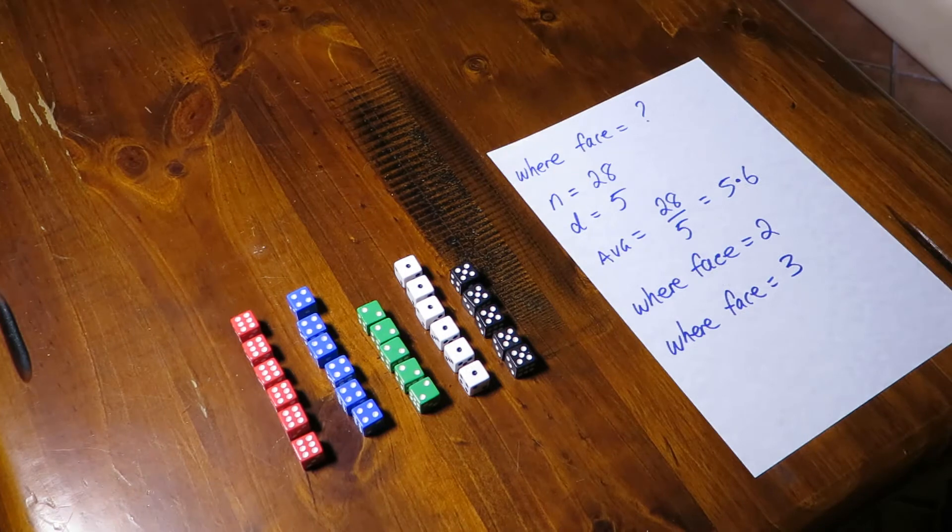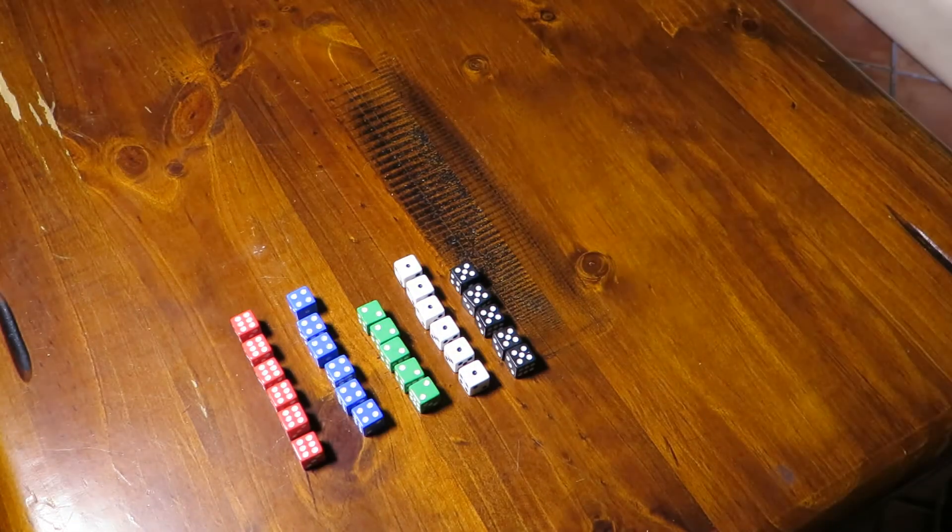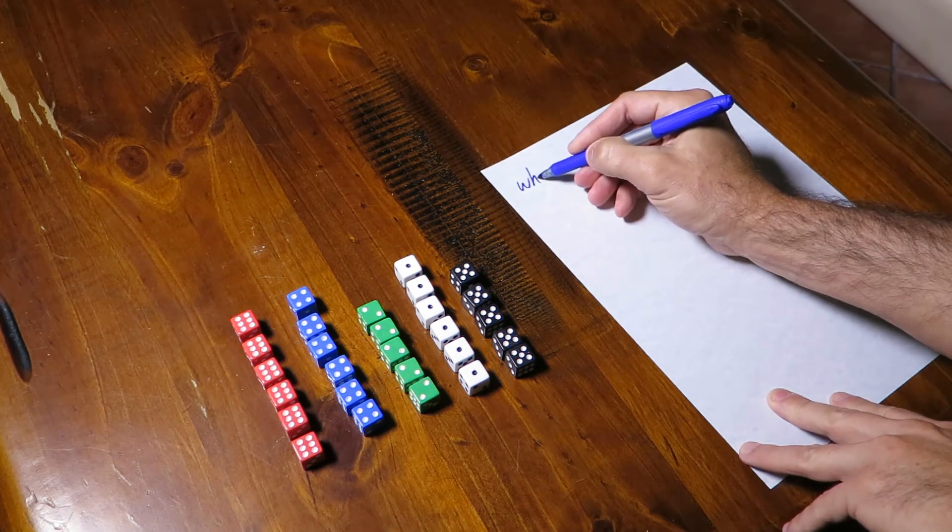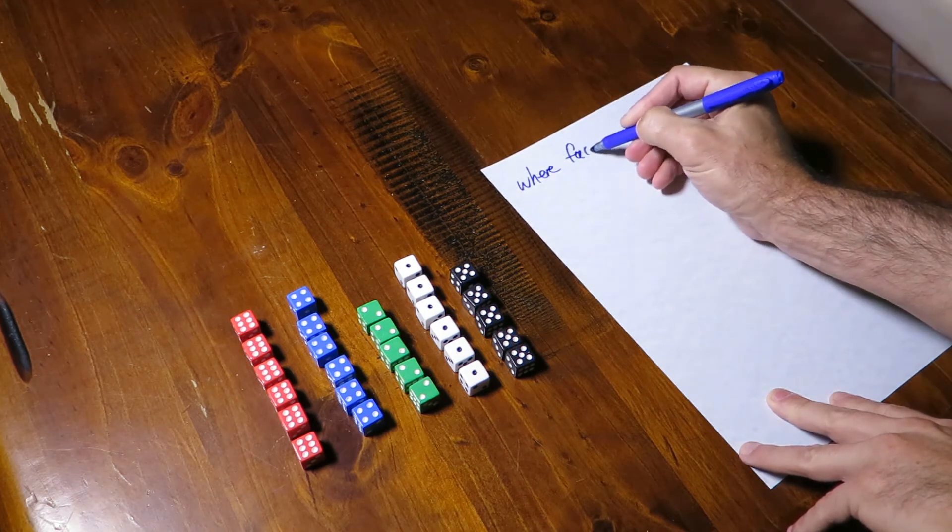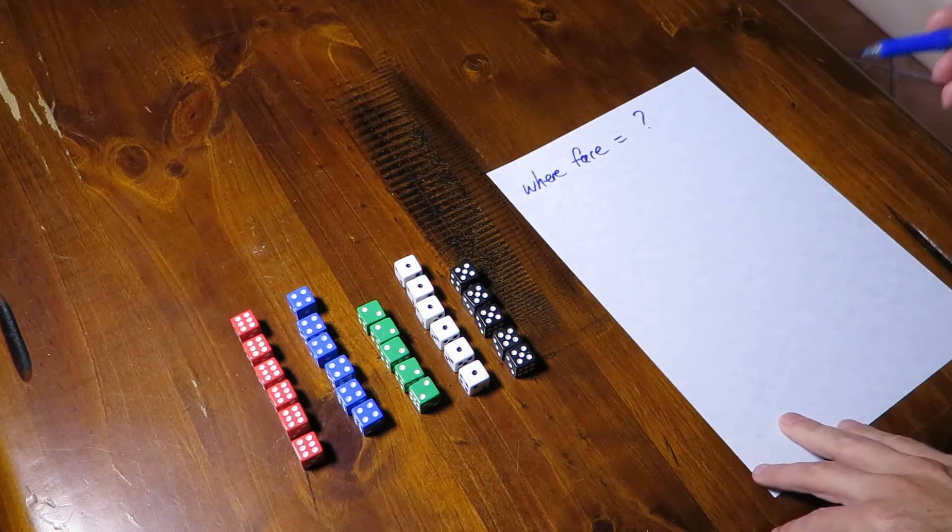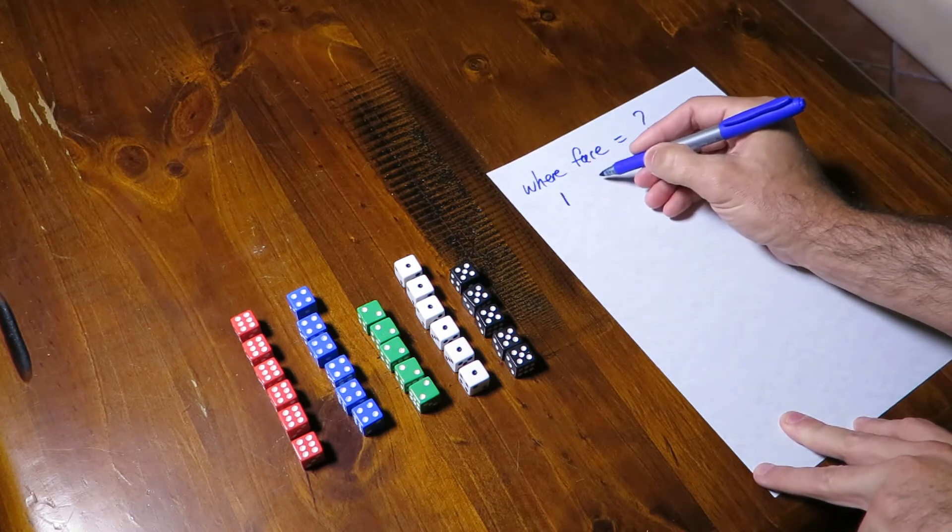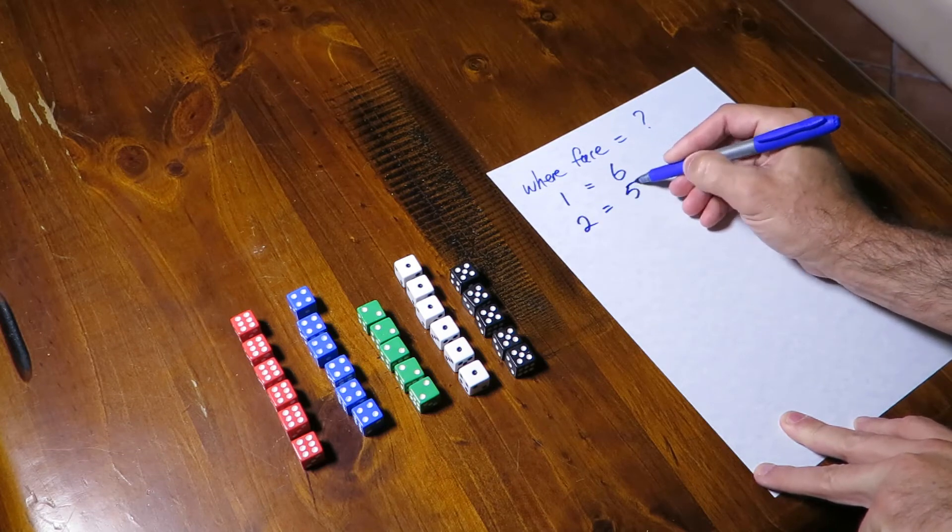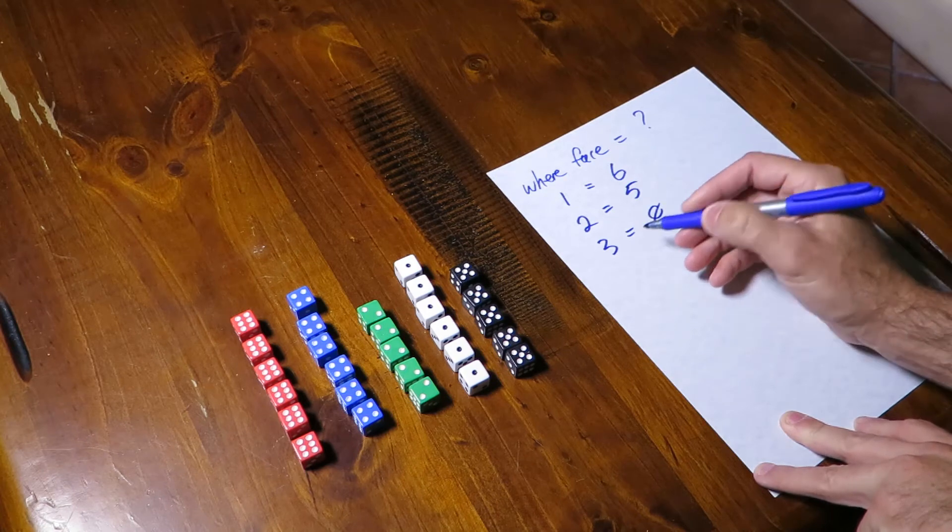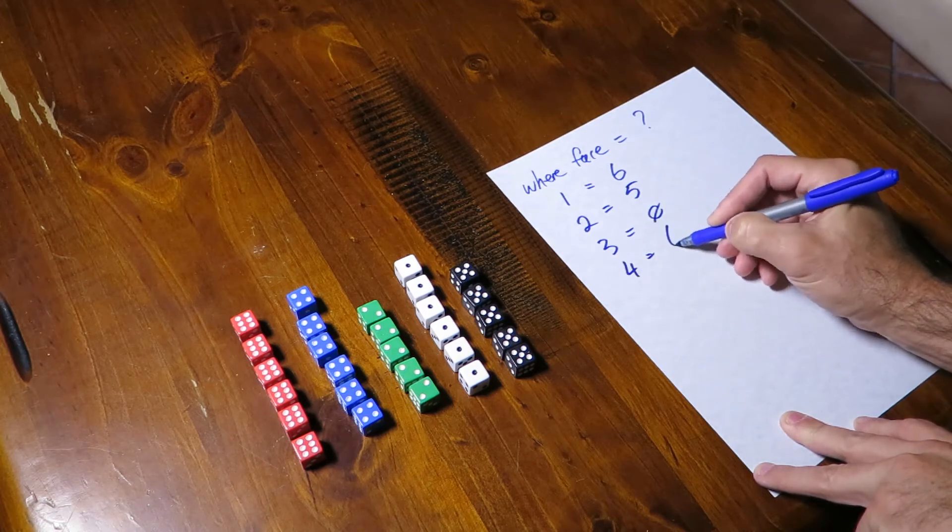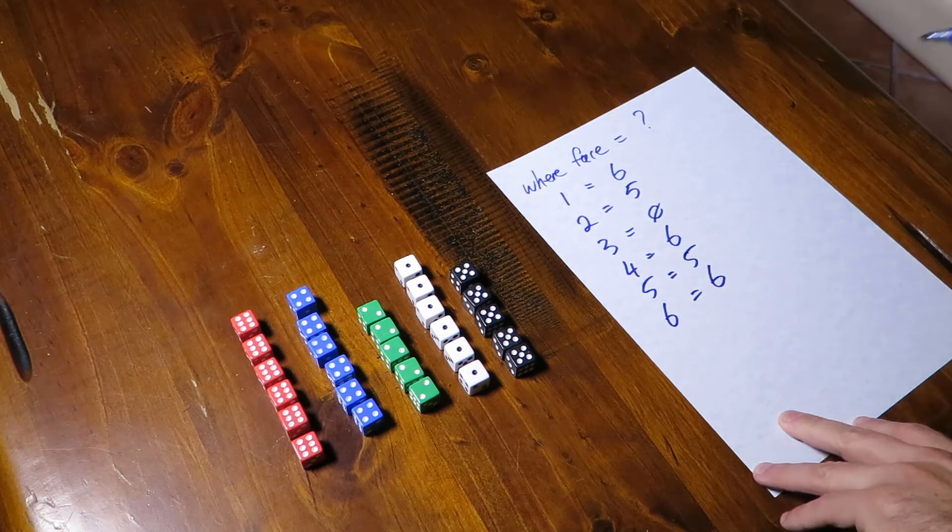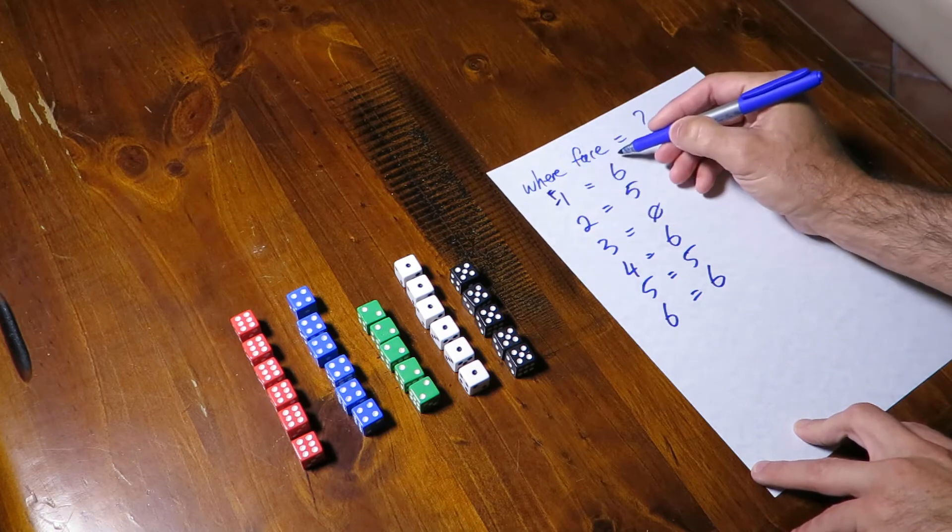What a histogram can tell us is the exact distribution if we're prepared to store enough information. So let's give it to this piece of paper. A histogram says well I'm trying to answer the question where face equals some value. So let's work out the distribution for each of those values. I know that I've got six ones. I've got five twos. I've got no threes. I've got six fours. I got five fives. I've got six sixes. So that's the face and that's the count.